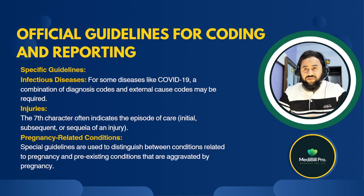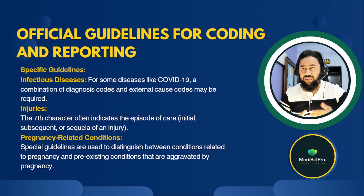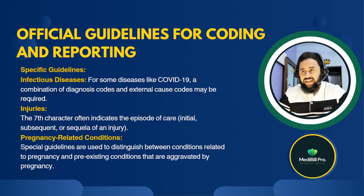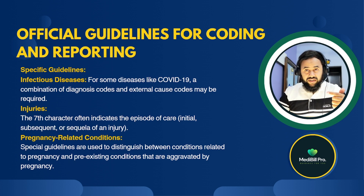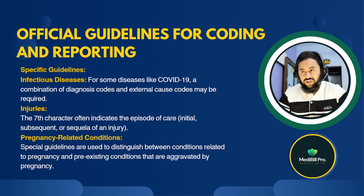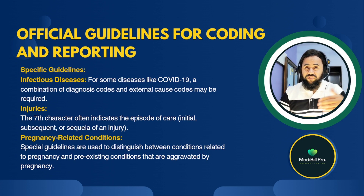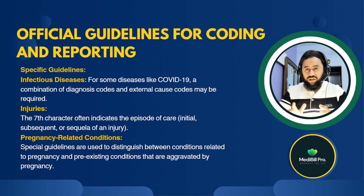Now for the specific guidelines: for infectious diseases like COVID-19, a combination of diagnosis codes and external cause codes may be required. For injuries, the seventh character often indicates the episode of care — whether it is an initial visit, subsequent visit, or sequela of an injury. For pregnancy-related conditions, special guidelines are used to distinguish between conditions related to pregnancy and pre-existing conditions that are aggravated by pregnancy.